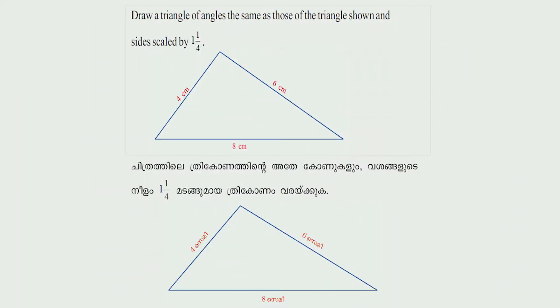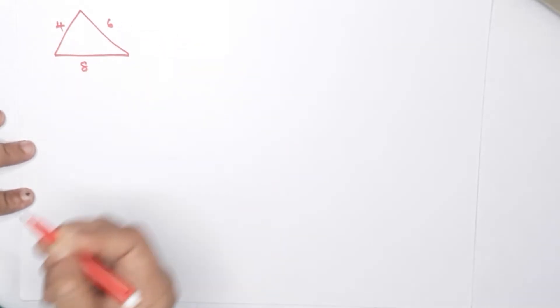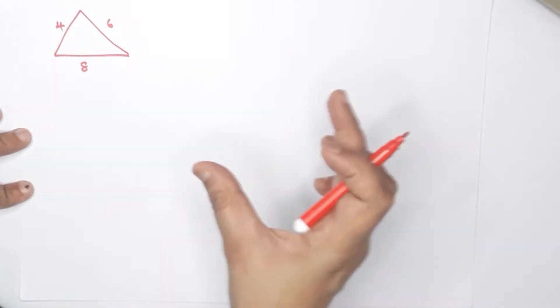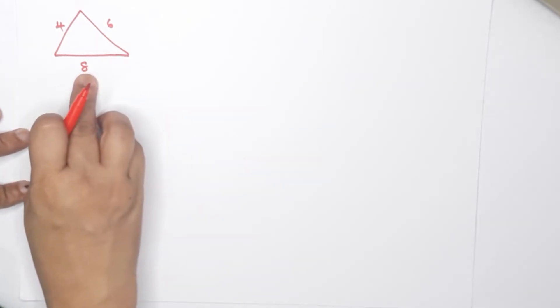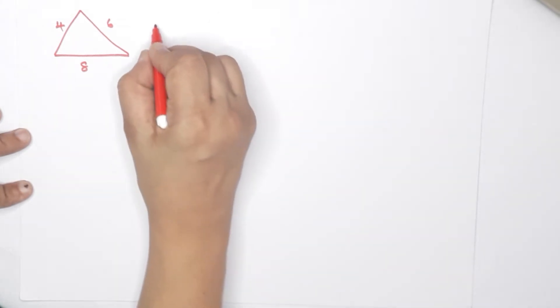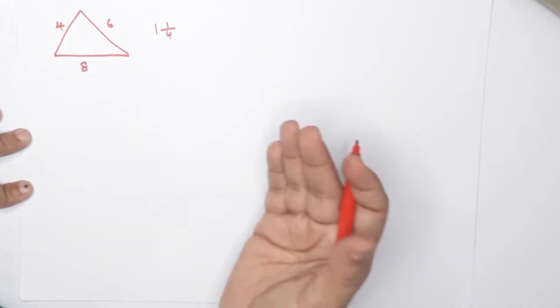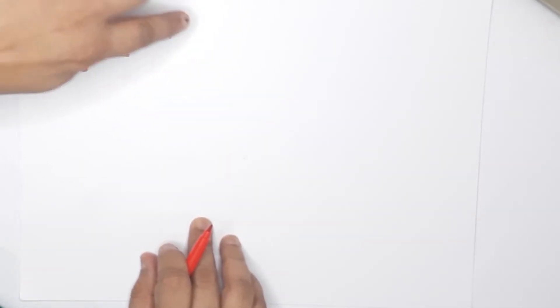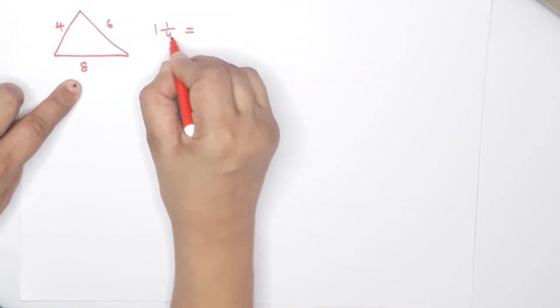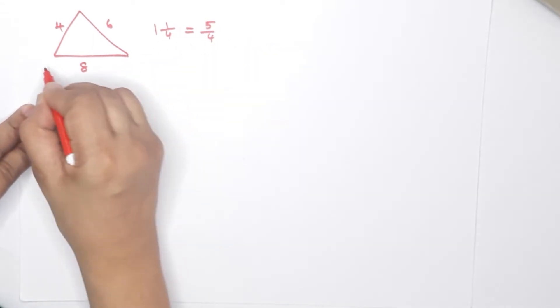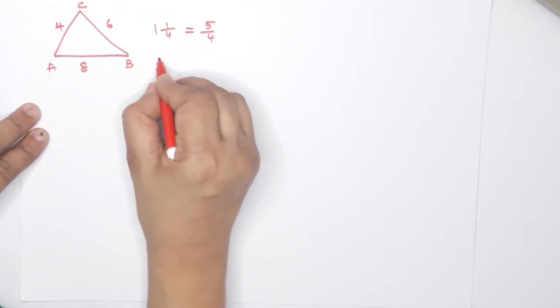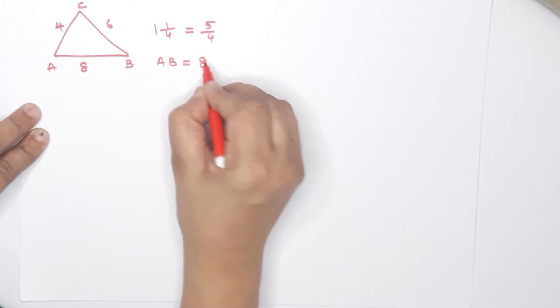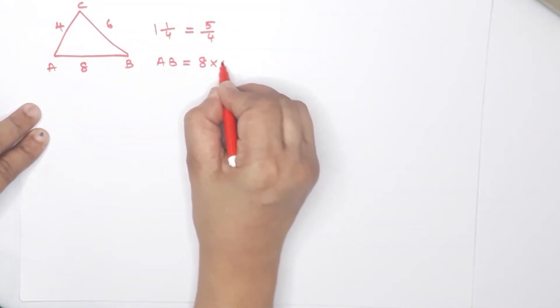First question: Draw a triangle with angles the same as those of the given triangle, scaled by 1 and 1 by 4. The original triangle has sides 4 cm, 6 cm, and 8 cm. The scale factor is 1 and 1 by 4, which equals 5 by 4. So AB equals 8 cm multiplied by 5 by 4, which means 10 cm.